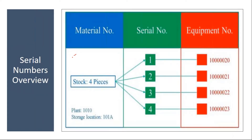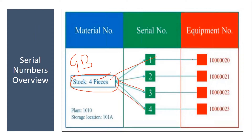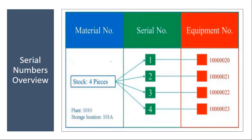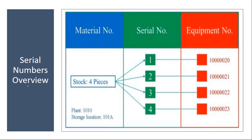Let's say in my company I have four gear boxes located in different places. The stock is four pieces. For these four gear boxes, you will assign a unique serial number, and apart from that you will have from our PM side a unique equipment number. So here there will be a material number, serial number, and equipment number. Equipment number is from our PM side, serial number is from the inventory management side, and material number is to identify. This is the combination.